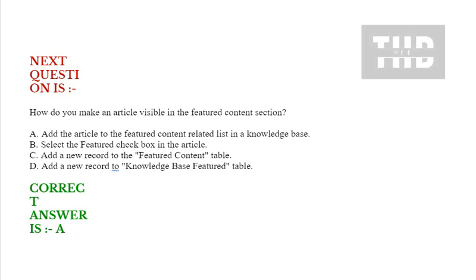How do you make an article visible in the featured content section? Option A: Add the article to the featured content related list in a knowledge base. Option B: Select the featured checkbox in the article. Option C: Add a new record to the featured content table. Option D: Add a new record to the knowledge base featured table.